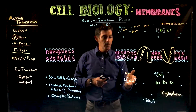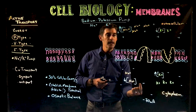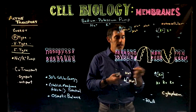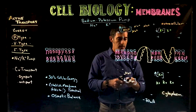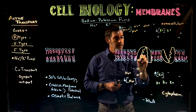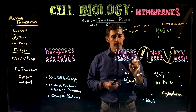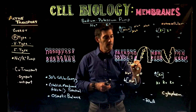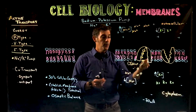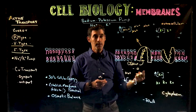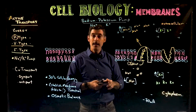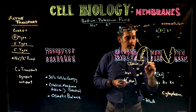With active transport we push things opposite to their diffusion direction. The sodium-potassium pump — a transmembrane protein — has three binding sites for sodium ions. Three sodium ions bind into these sites. The pump then needs to change shape and push those sodium ions to the outside of the cell — active transport from low to high concentration — which requires ATP.